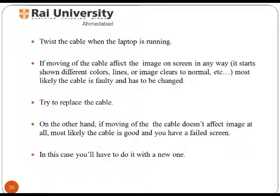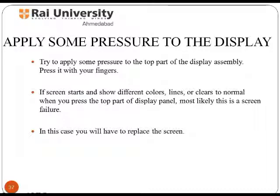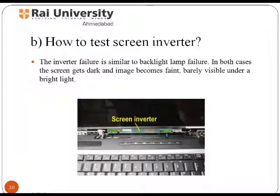You must replace this cable to eliminate the fault. Another method to resolve display problems is to apply pressure on the top part of the display assembly. If this results in the screen showing lines or different colors, it implies that the screen has been damaged and you will need to replace it to solve the problem.